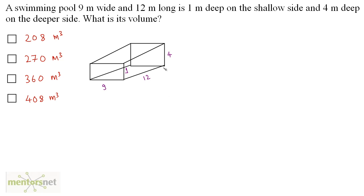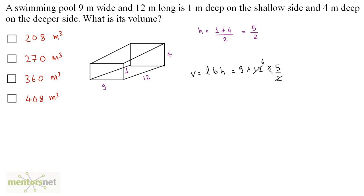To calculate the volume, what we can do is take the average height. Average height equals 1 plus 4, these two heights divided by 2. So this is 5 by 2 — that's the average height. So volume equals L times B times H, that's 9 times 12 times 5 by 2. 2 times 6 is 12, so 9 times 30. 9 times 30 is 270. So the volume is 270 meters cube.